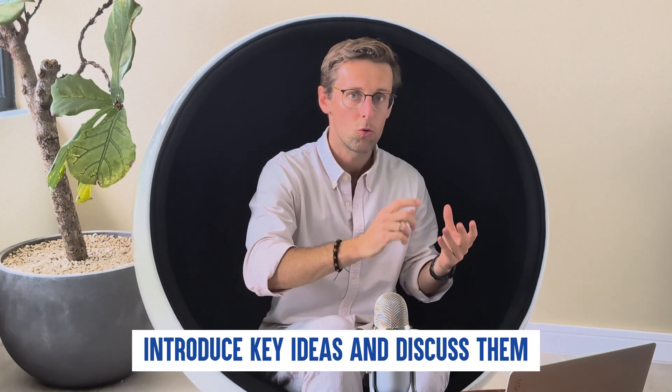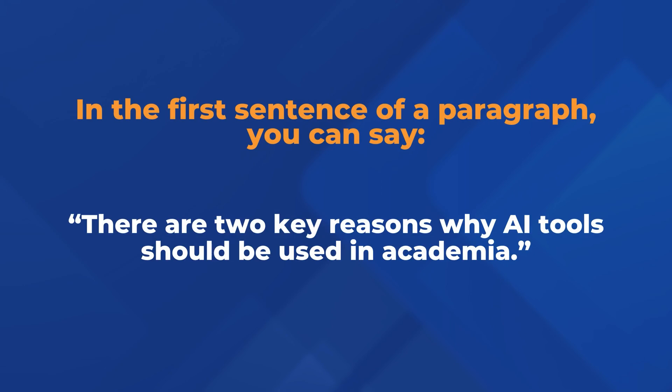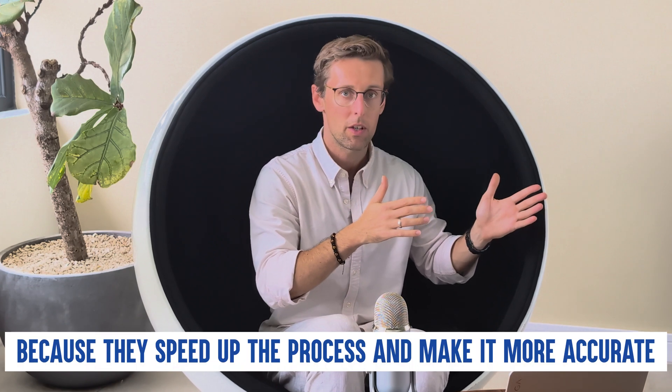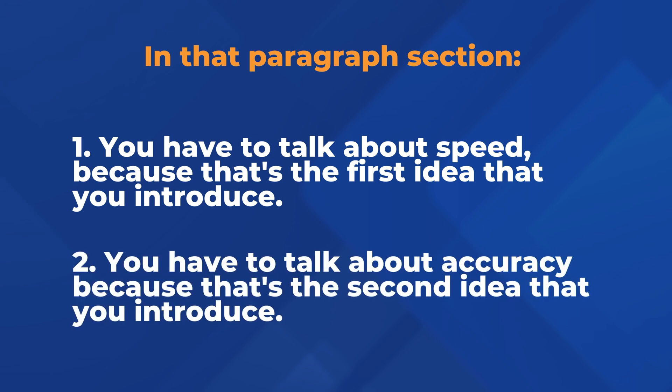This is exactly what you want to do in your paper as well. You want to introduce key ideas and then discuss them in the order that you introduce them. For example, in the first sentence of a paragraph you might say there are two key reasons why AI tools should be used in academia. Then you need to discuss those ideas in order — if AI tools help you speed up the process and make it more accurate, then first discuss speed and then accuracy. That's the stepping stones principle.